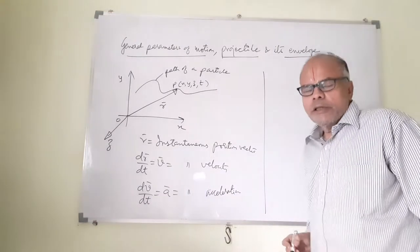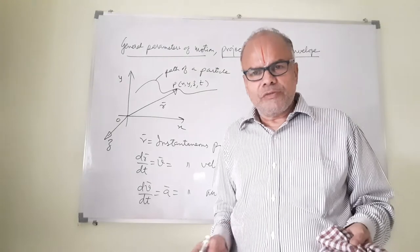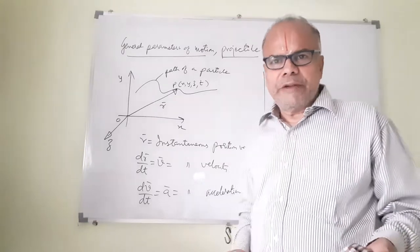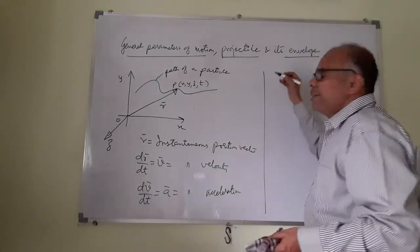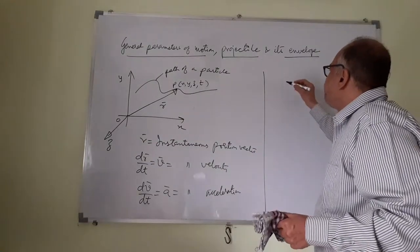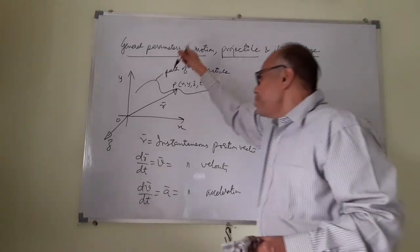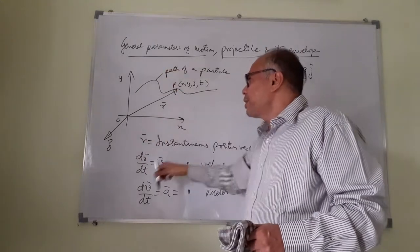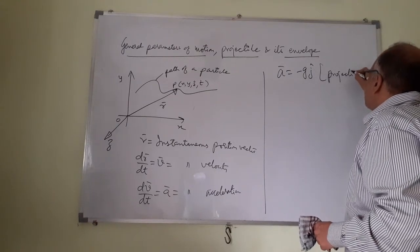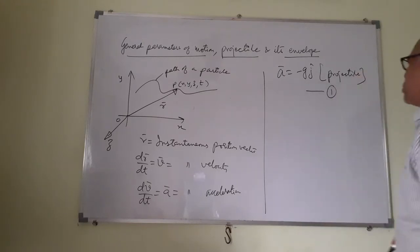When it comes to a projectile — a body projected into space from the surface of the earth — no other force is assumed to act other than the force of gravity. Therefore, the acceleration is the downward acceleration g, 9.8 or approximated to 10. So a would be minus gj. If we assume j to be the vertical y-axis, then a = −gj. This is the first equation for projectile motion.